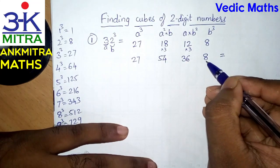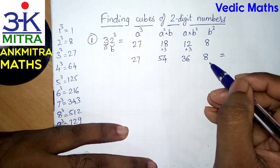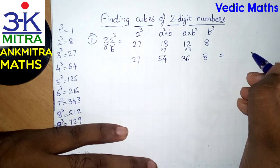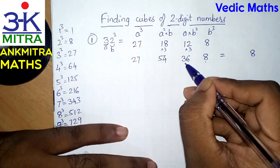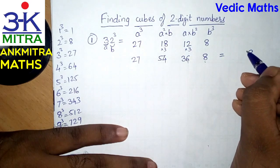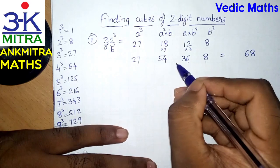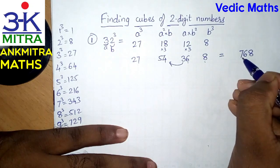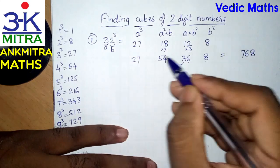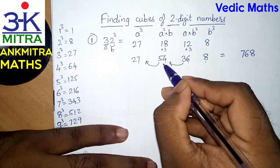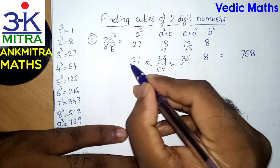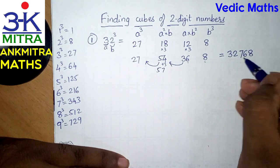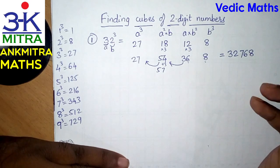Now the final answer is easy to arrive at. We take one digit from each number and carry the remaining part to the next left number. The 8 has only one digit so nothing is carried — 8 goes in the units place. From 36, the 6 is taken to the answer and the 3 is added to 54, making 57. So 7 is written and 5 is carried. Then 27 plus 5 is 32. So the final answer is 32,768 — that is the cube of 32.